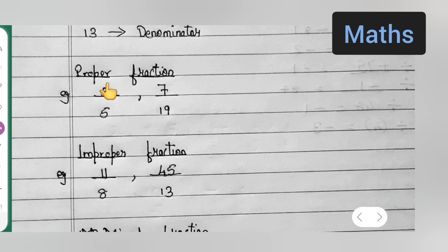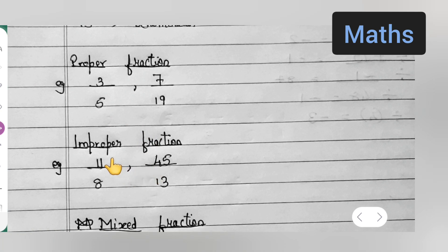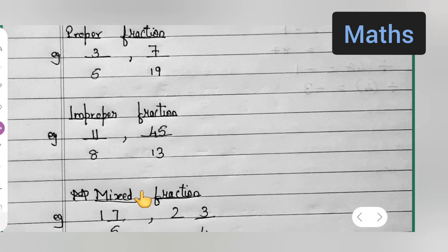In improper fraction, what happens is the greater number will be your numerator and smaller number will be your denominator. That is known as improper fractions.